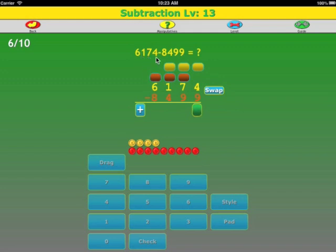6,174 minus 8,499. Again we write them in column order. And we notice that 6,000 is less than 8,000, so we swap. Now the red is on top and the yellow is on the bottom.